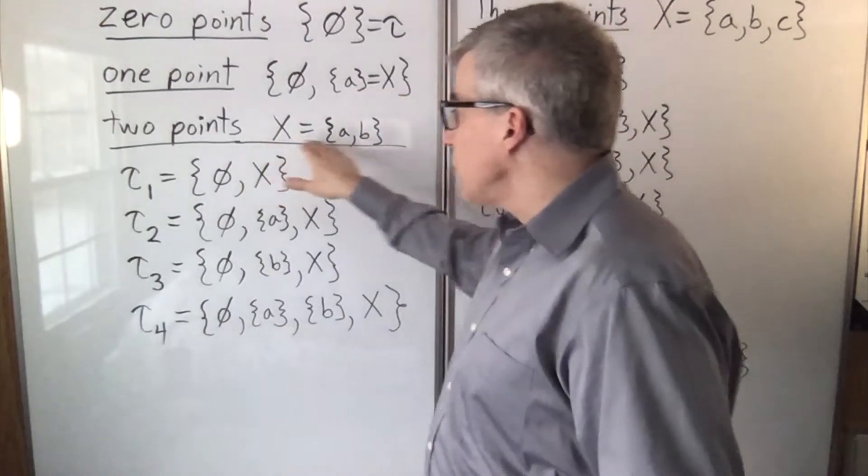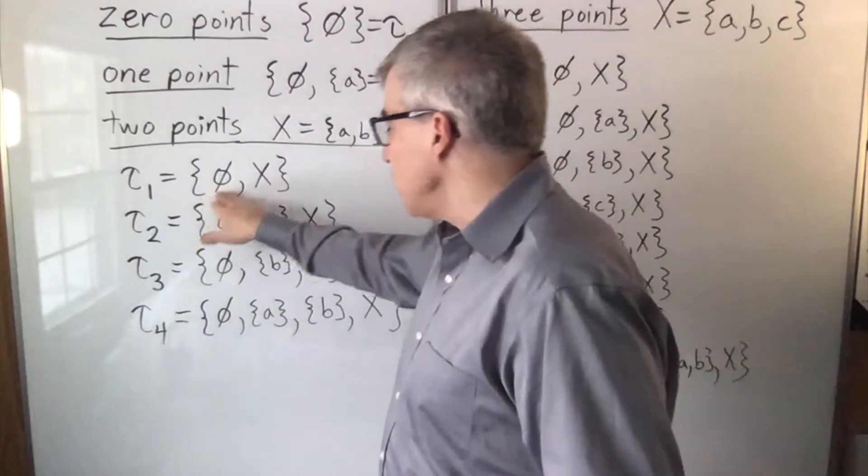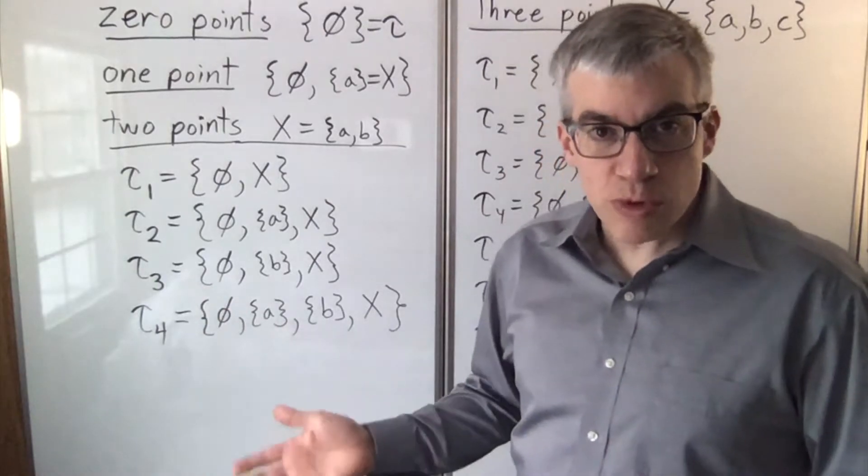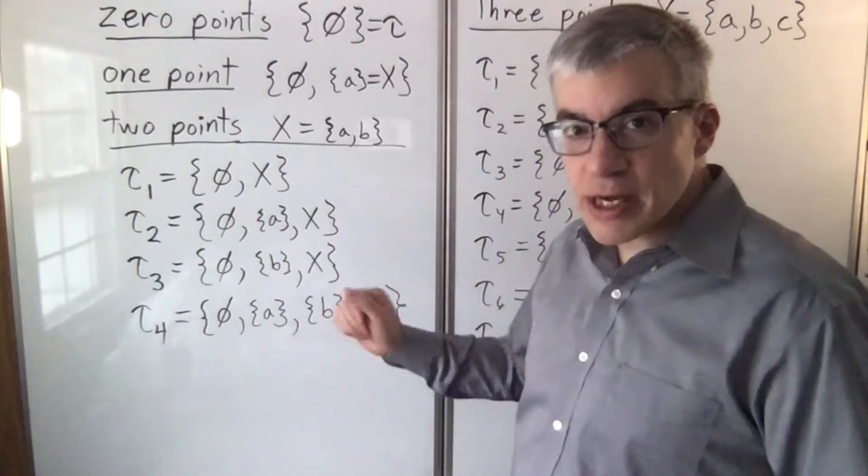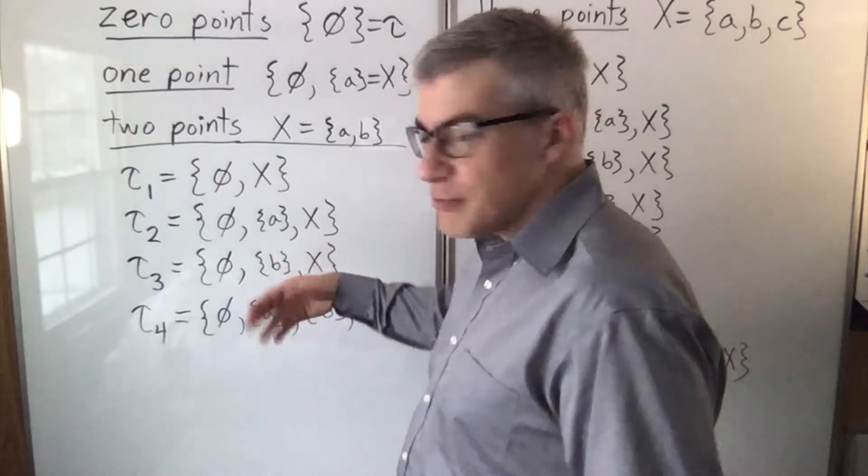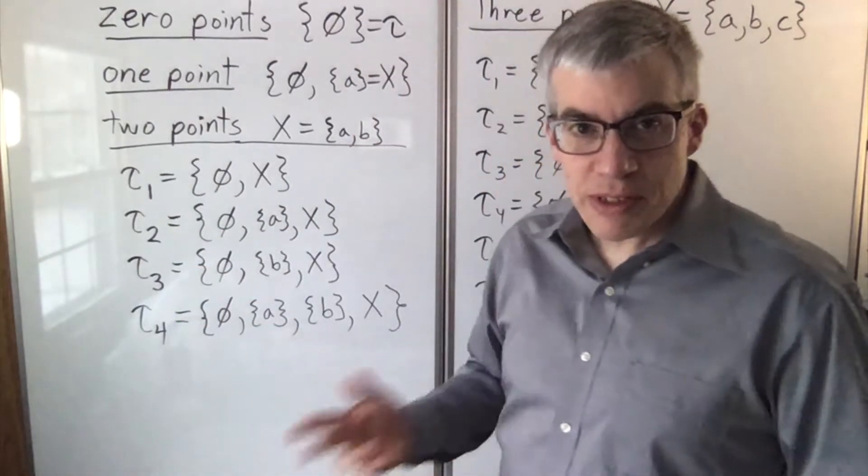If you have two points, you have four possible topologies. You can have just the empty set and the entire space, but those are in every single one. That's one of the rules of a topology. You have to have the empty set. You have to have the entire space. So there are four possible topologies here, and if you can't tell the difference between A and B, then topology 2 and topology 3 are the same.